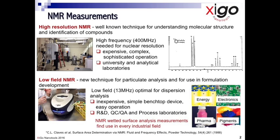Although the relaxation times are largely the same whether measured using either a conventional analytical NMR instrument or the Acorn Area device, surface liquid relaxation times are much shorter at the lower 13 megahertz frequencies — see the paper referenced below by Claves. This results in superior resolution in relaxation time differences and correspondingly changes in the extent or nature of the particle-liquid interface when using the Acorn Area.